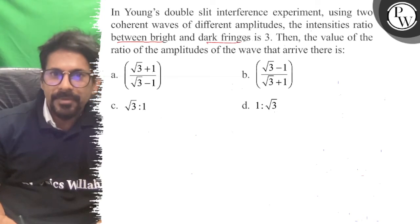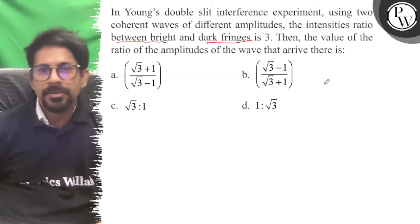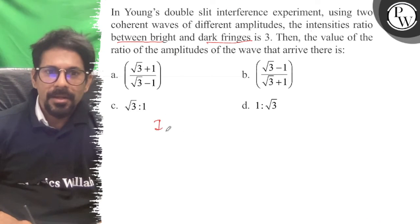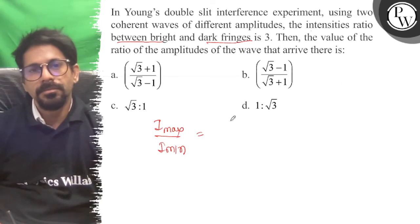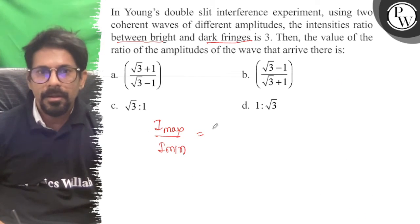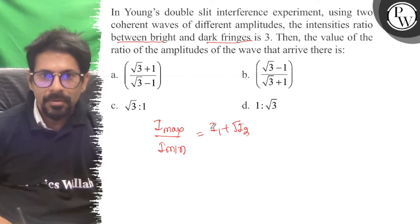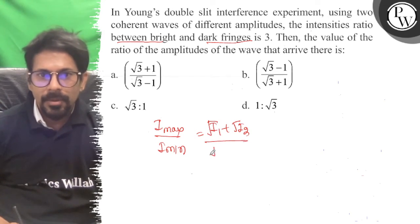...bright and dark fringes. So here, I max upon I minimum equals (root I1 plus root I2) upon (root I1 minus root I2), the whole squared.